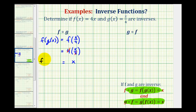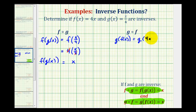So we've shown that f of g of x is equal to x, but this is not enough information to verify these two functions are inverses. We also need to show that g of f is also equal to x. So we'll write g of f as g of f of x. Since the inner function is f of x, which is equal to four x, we'll have g of four x. And since g of x is equal to x divided by four, this composite function will be four x divided by four, which again simplifies nicely to just x.